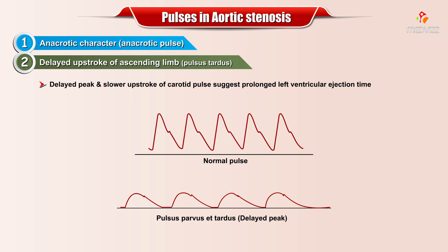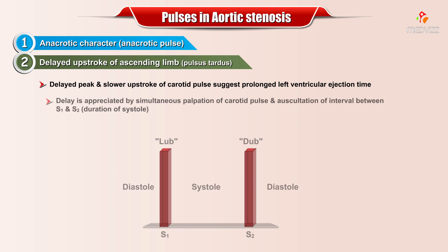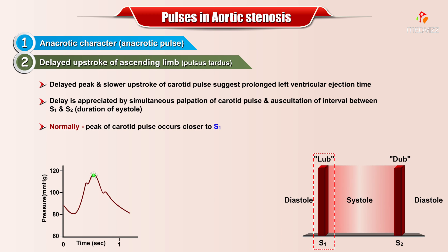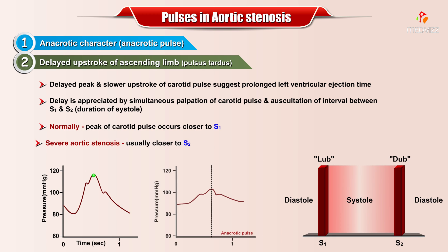Delayed upstroke of the ascending limb, or pulsus tardus. A delayed peak and slower upstroke of the carotid pulse suggests a prolonged left ventricular ejection time. The delay can be appreciated by simultaneous palpation of the carotid pulse and auscultation of the interval between S1 and S2. Normally, the peak of the carotid pulse occurs closer to S1.